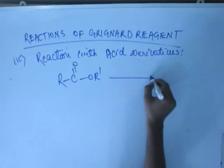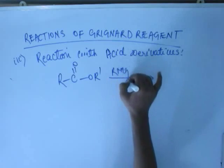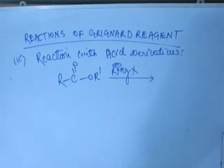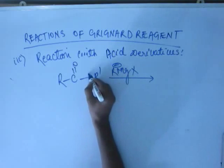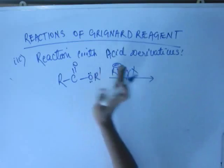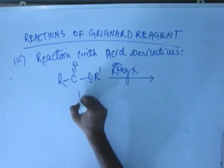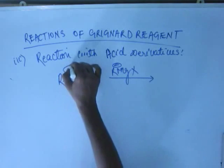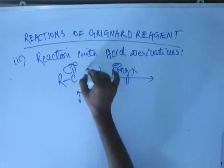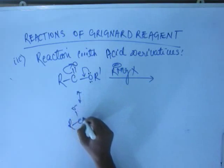Now suppose I have added Grignard reagent into a system having an Ester. This Ester has an Oxygen with a lone pair, so this Oxygen will have a plus M effect, giving its electrons by resonance to this carbon. You can draw the resonating structure by breaking this bond, shifting the electrons to the orbital of Oxygen, and forming a pi bond.